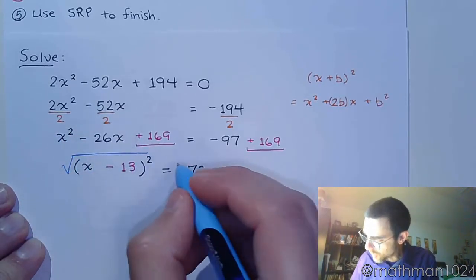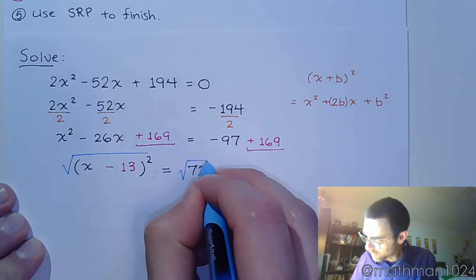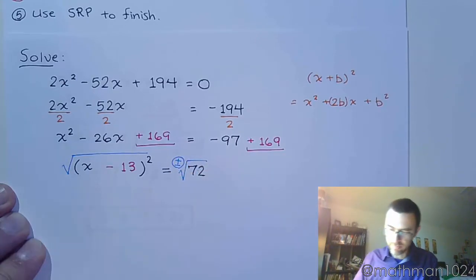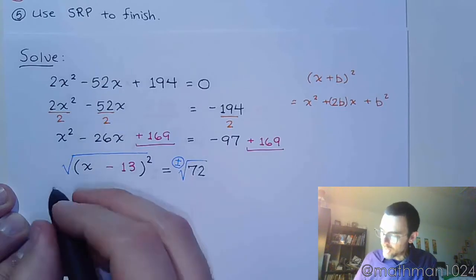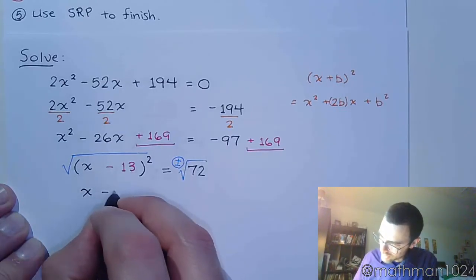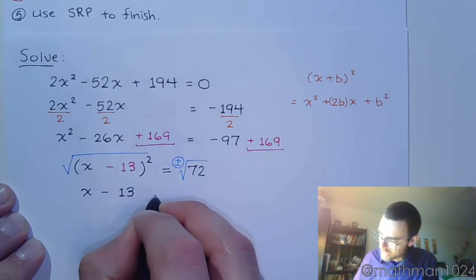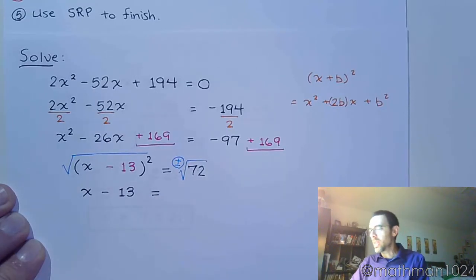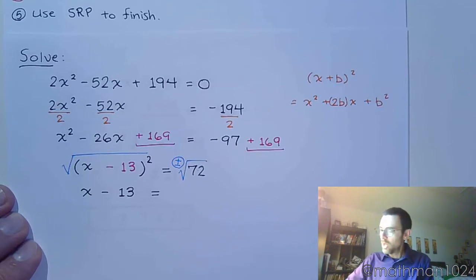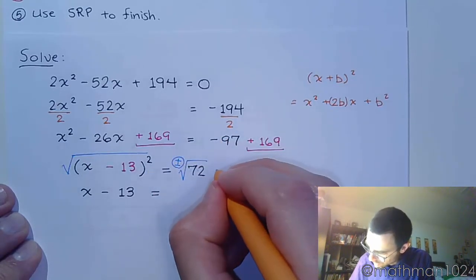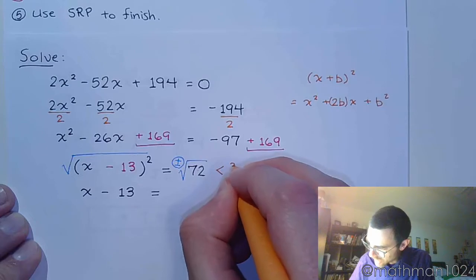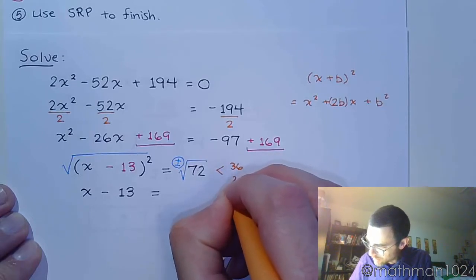So, let's take the square root of both sides. Don't forget the plus or minus. And now we have x minus 13 is equal to... And how do I want to break down 72? Or can it break down?